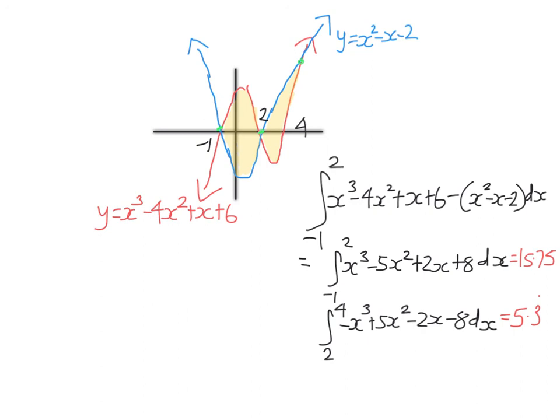Remember that you can get your graphics calculator to check each of these integrals. You can graph them and then second trace and use the integral symbol. So this 15.75 is this area, 5.3 recurring is this area. And so the total area shaded, those two added together, 21.083 recurring. And of course, it's units squared.